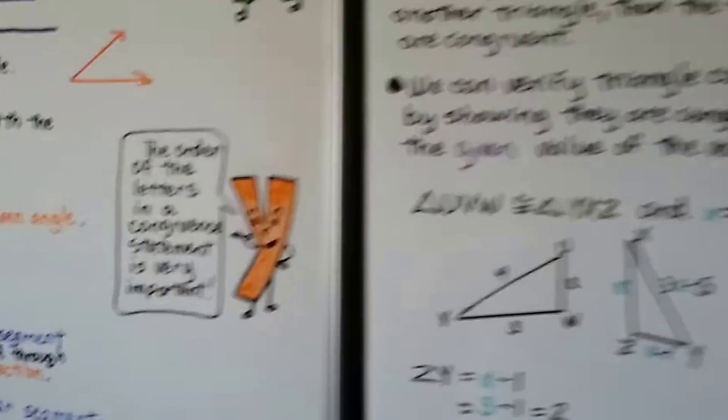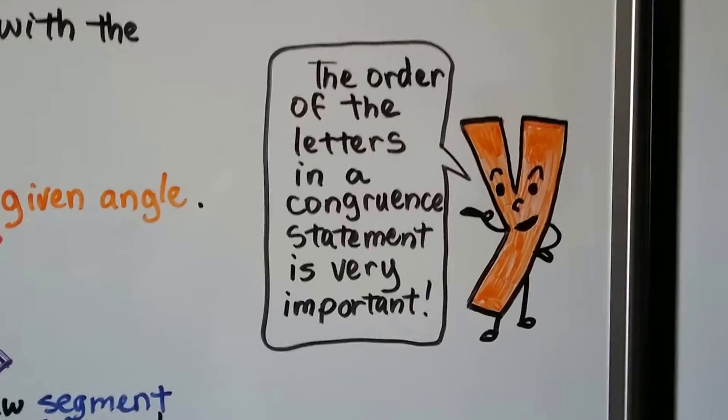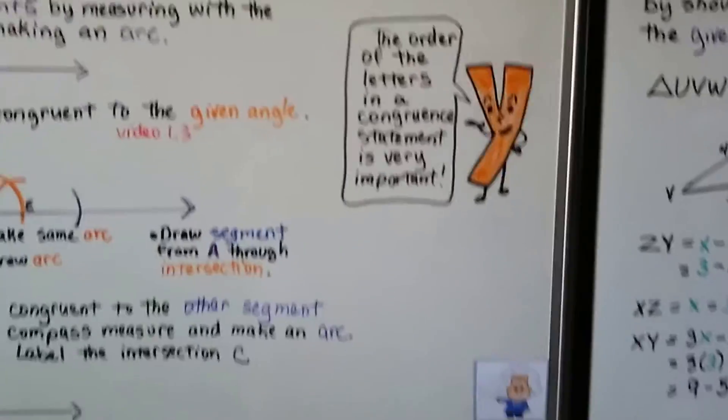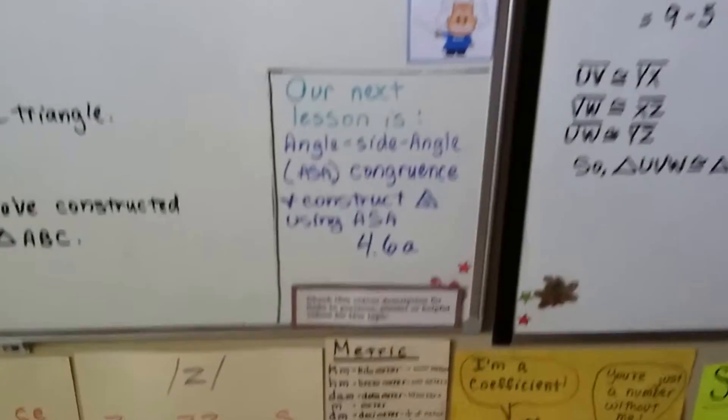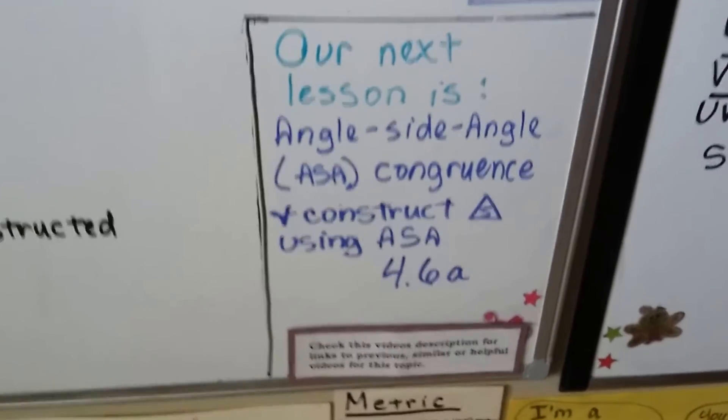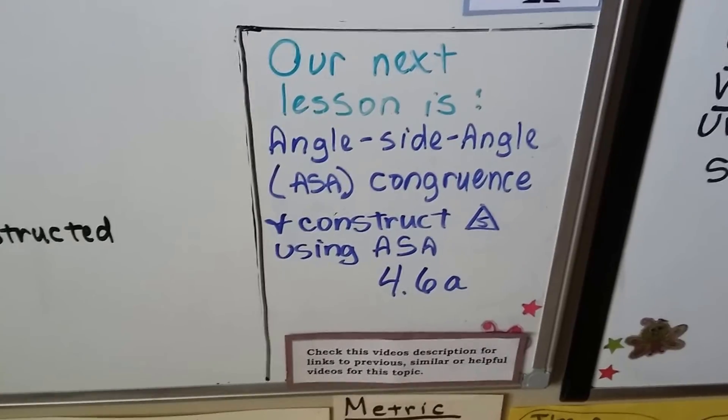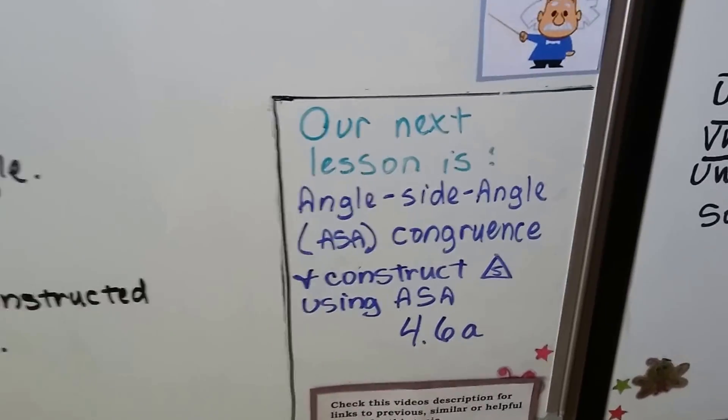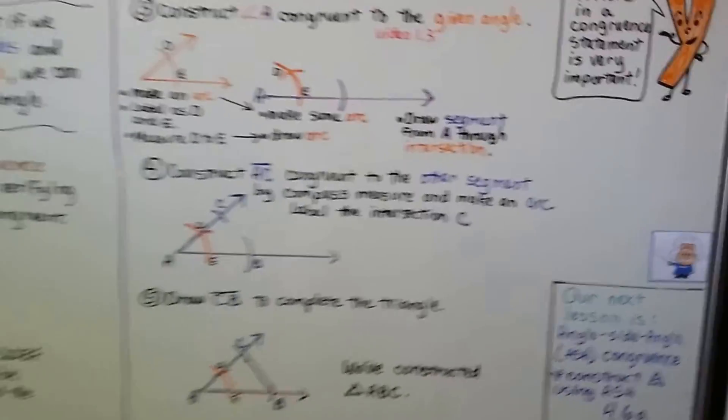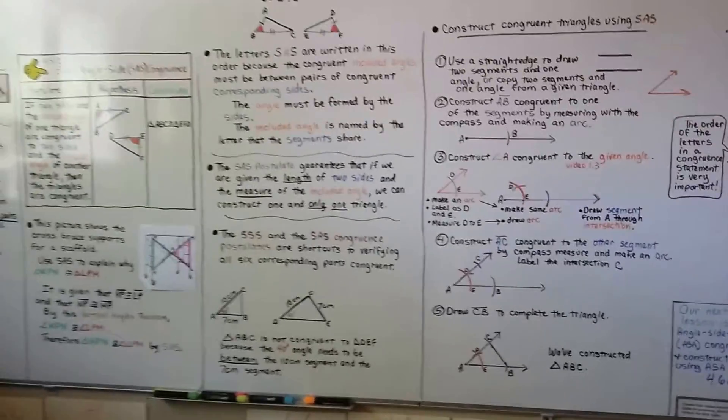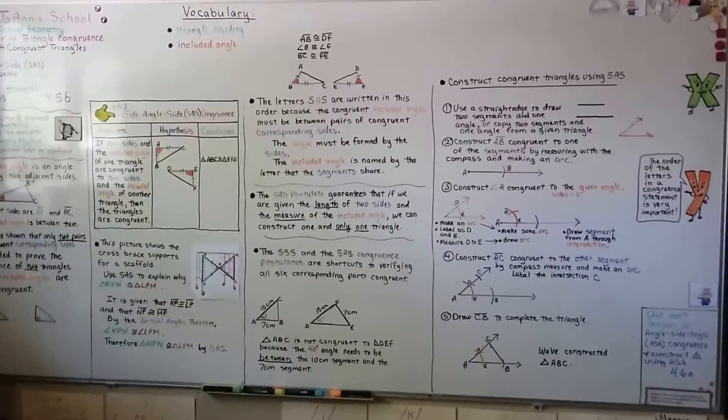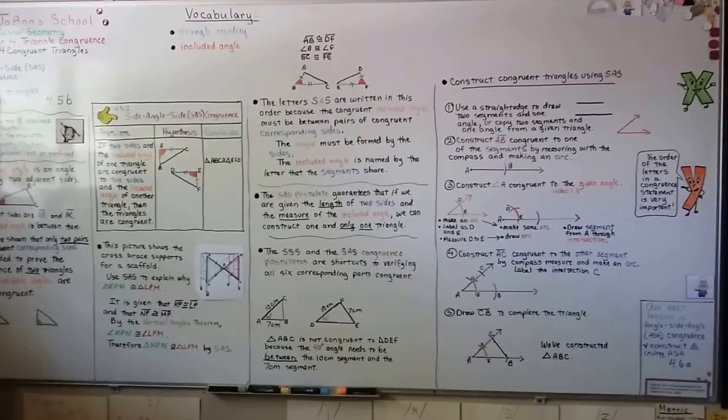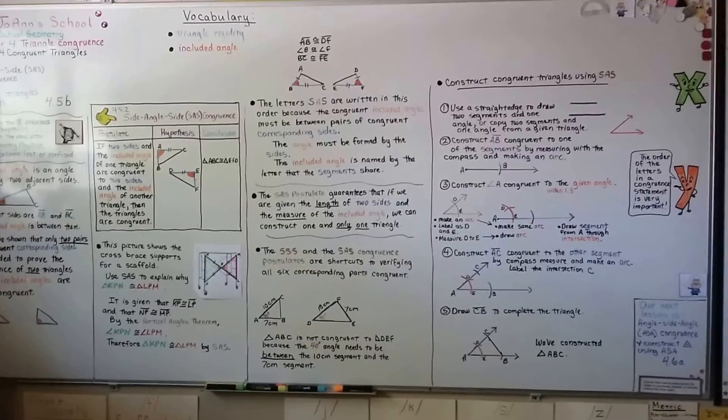Be careful because the order of the letters in a congruence statement is very important. You don't want to say side side angle - that's completely different than SAS. I'm going to talk about angle side angle in the next lesson, ASA congruence. We're going to construct triangles using ASA - that's 4.6A. I hope you're okay and able to follow along with all of these videos. They're all in order from the beginning of the school year till the end, so it's the entire geometry course. Hit the like button and I'll see you next time. Bye!